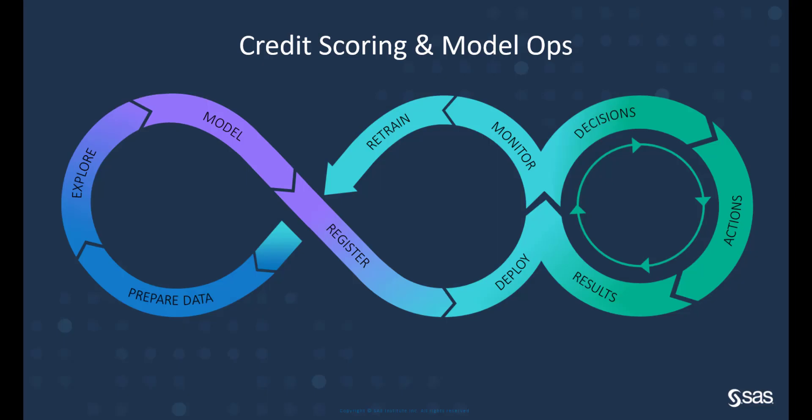My name is Antti-Heinu and I work as an AI and cloud advisor at SAS. This is a four-part video series where I provide an overview on credit scoring and model ops on SAS Viya. The first part focuses on exploration and visualization, the second part on machine learning, the third part on governance and deployment, and the last part covers some data preparation examples.